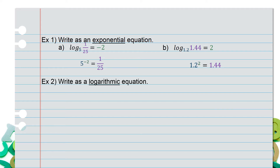Example 2: write as a logarithmic equation. For part a, I have 2 to the 4th equals 16. Currently it's written as an exponent, but I want to change it into a logarithmic equation — meaning I want to see the word log. So it'll be log with the same base, base 2, which gives me a result of 16, equals my exponent, which was 4. So log base 2 of 16 equals 4.